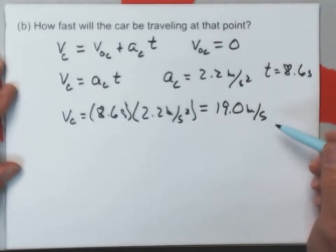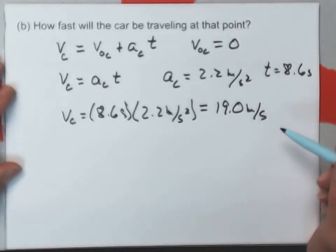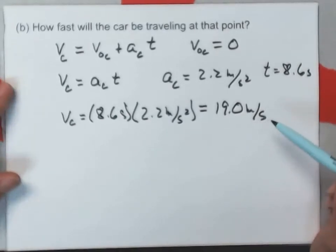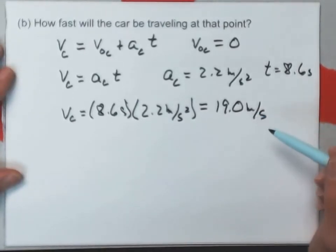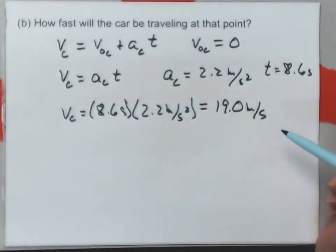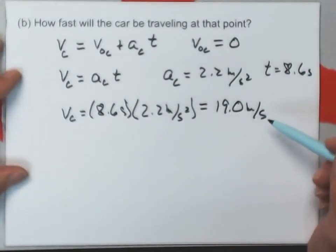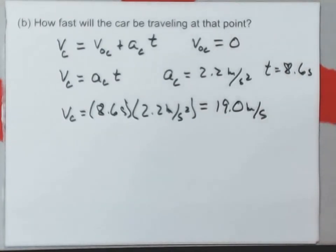That happens to be twice the velocity of the truck. And that's actually not an accident when you have a chase problem like this. It kind of works out that way. I usually try not to make the ones on tests quite so obvious. But anyway, that's how fast the car is traveling at that point. By the way, we should have just two significant figures on that 19 meters per second.